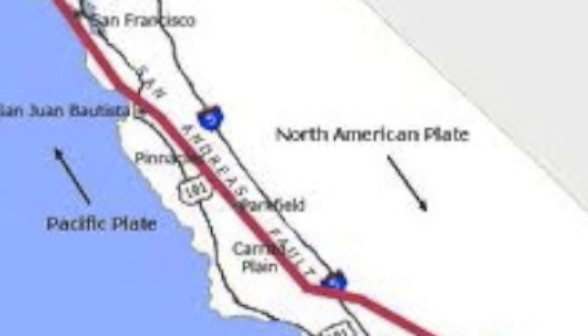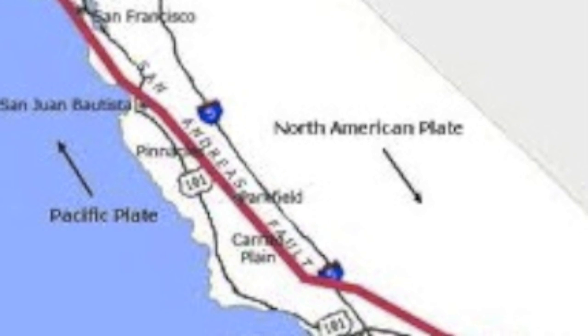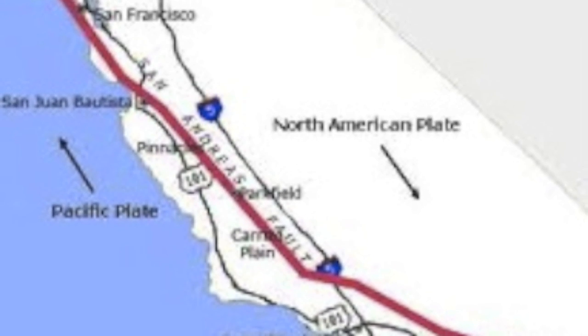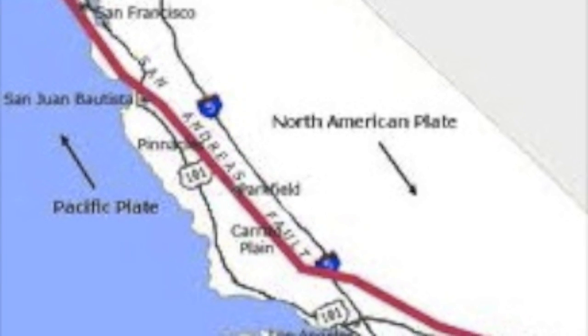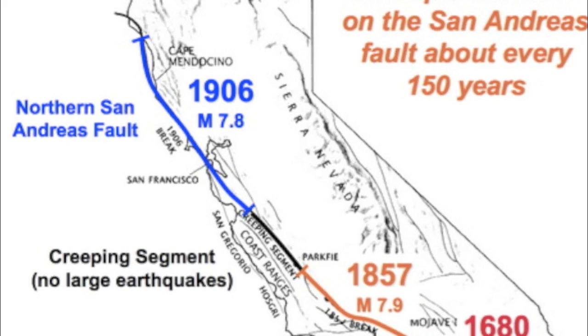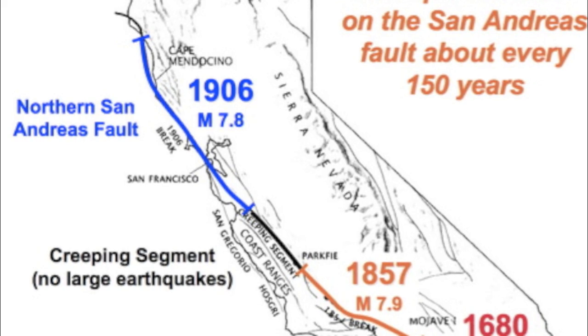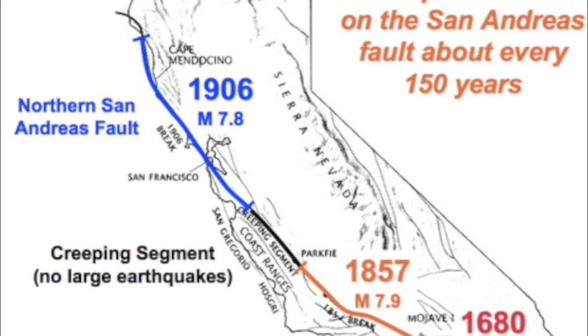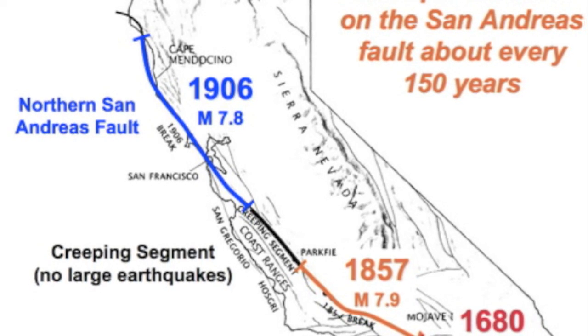These mountains were formed as a result of movement along the fault and are also called the transverse range. After passing through Curran County, the fault bends northward, also known as the Big Bend. This section of the fault has an earthquake occurrence of 140 to 160 years.